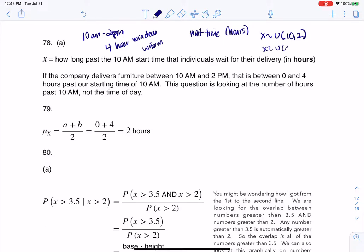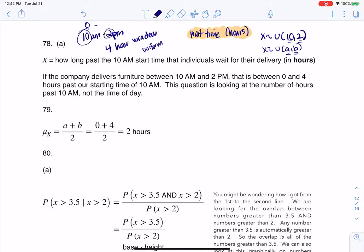Whenever you talk about a uniform distribution you always go from low to high, A to B. And A has to be a smaller number than B. So it can't be from 10 to 2 because 10 is larger than 2. And what we have to realize is that we're talking about wait times. So if this furniture delivery company showed up right at 10, you would have waited 0 hours. If they showed up at 2, you would have waited 4 hours. So really what's happening here is that you have a uniform distribution from 0 to 4. So that's what we're looking at and that's our answer for 78. It's A.